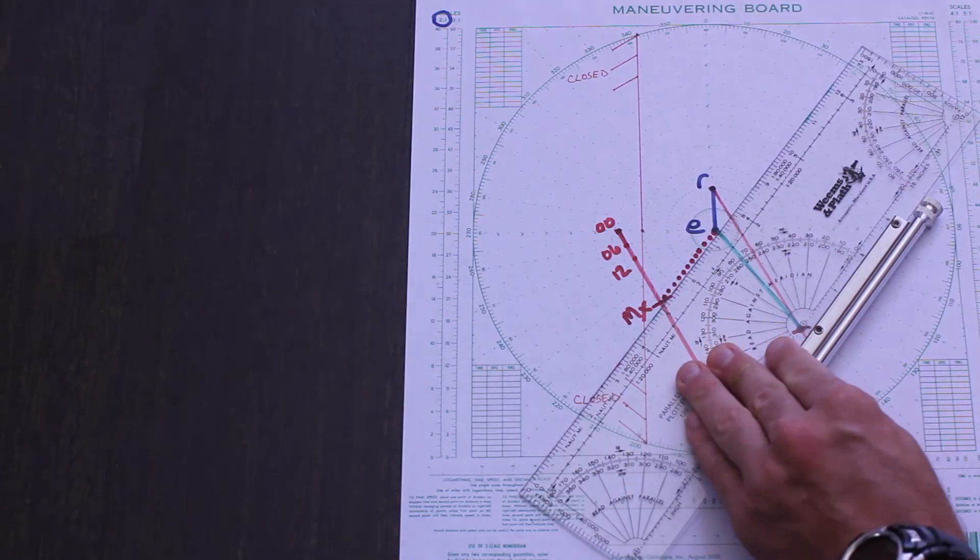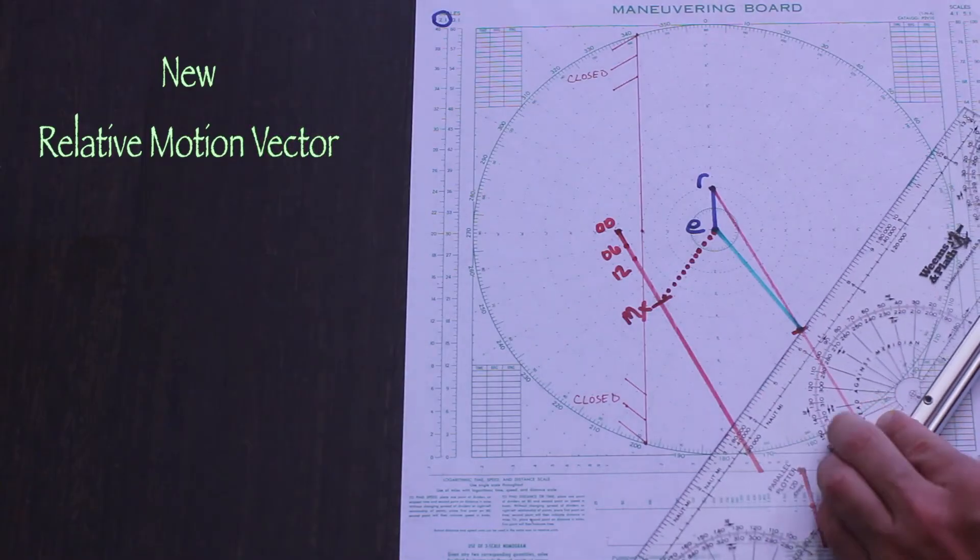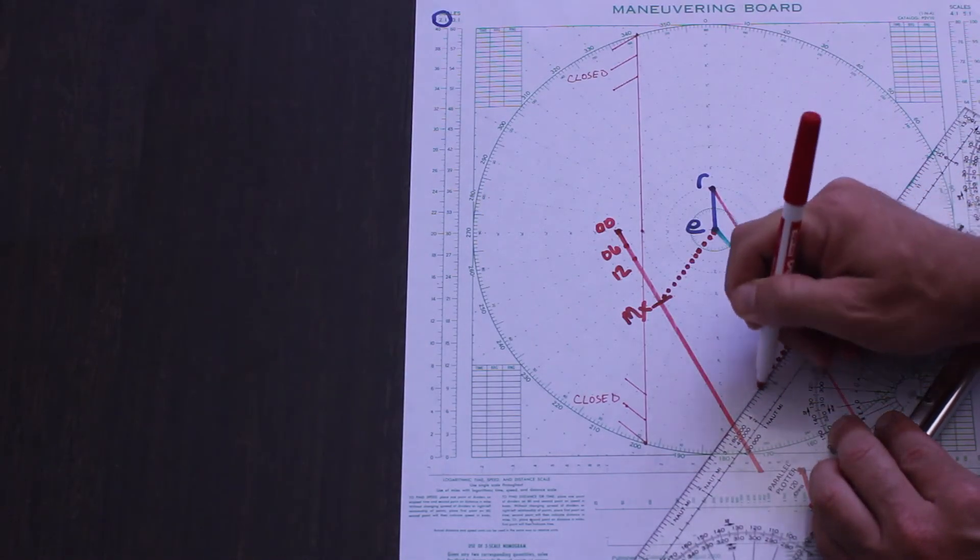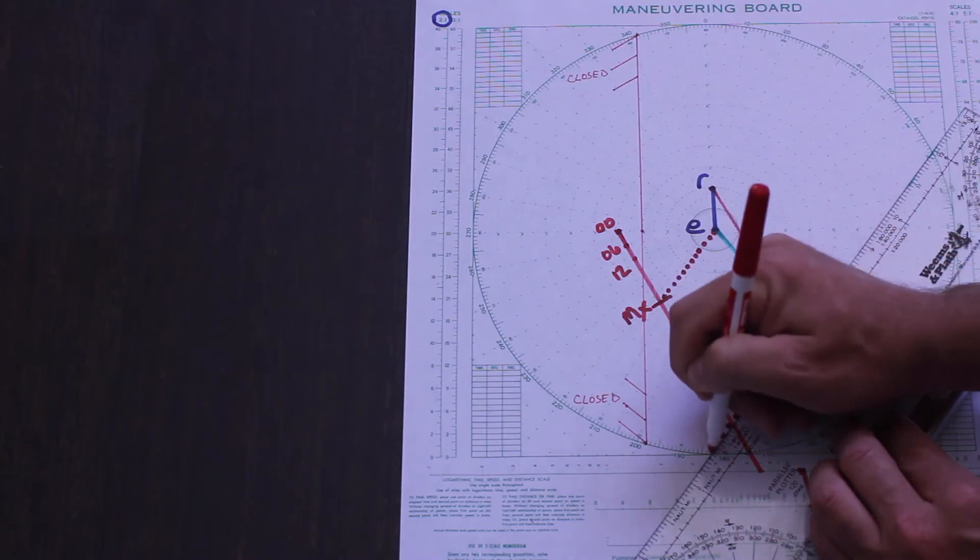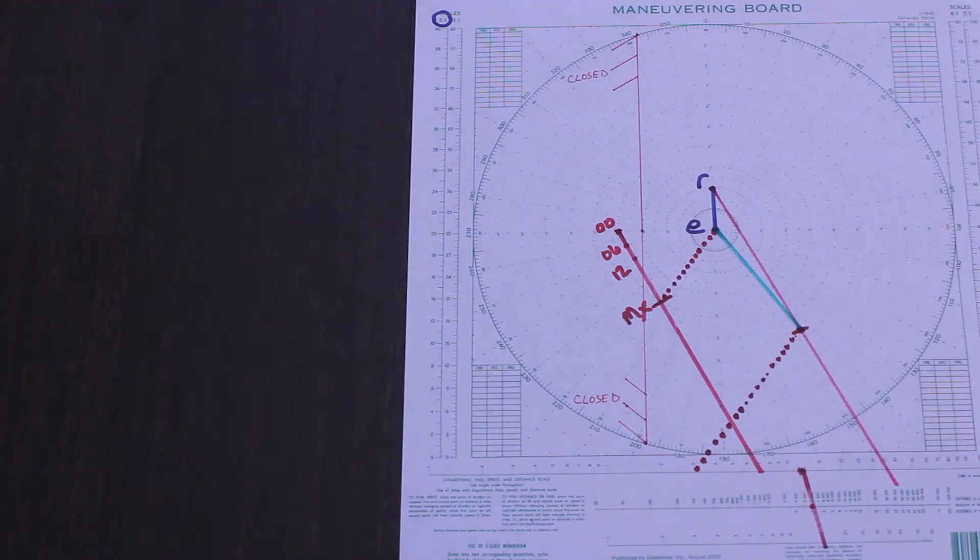Since the contact's course and speed will remain the same, we parallel the new relative motion line to point M and plot backwards. Then we have the new relative motion vector. This part isn't always apparent, so try and think about the orientation of the vessels to give yourself a reality check. Anywhere along this line will yield an appropriate intercept.